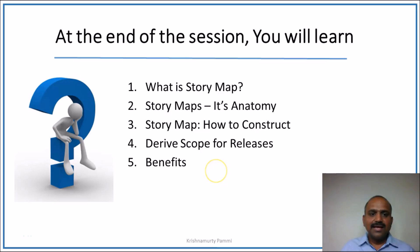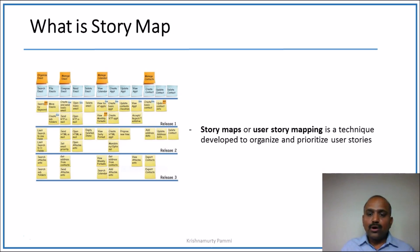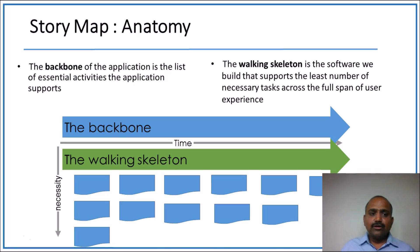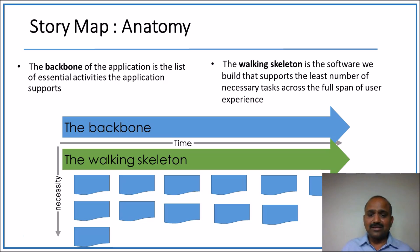At the end of this session, you will learn what a story map is, its anatomy, how to construct a story map, how to derive scope for releases, and the benefits. User story mapping is a technique developed to organize and prioritize user stories. The anatomy is twofold: it has a backbone — the list of essential activities the application supports — and a walking skeleton, which is the software we build that supports the least number of necessary tasks across the full span of user experience.